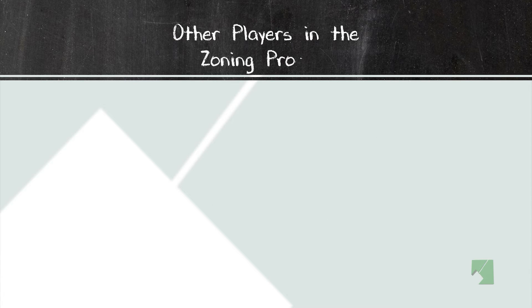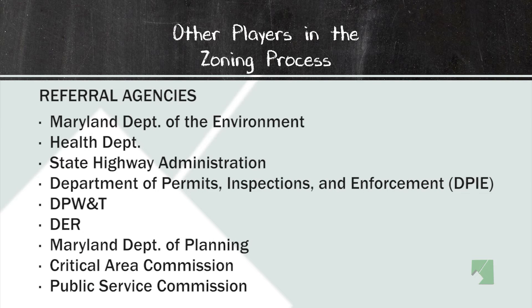The other players in the zoning process are referral agencies. They often get referrals of application proposals from the planning department so they can review them and comment in their particular area of expertise. State Highway Administration, for instance, regulates Maryland roads within Prince George's County. So if development is proposed on a Maryland State Road, the State Highway Administration would weigh in with comments on how that development will be served by that road.